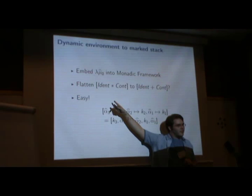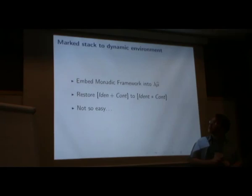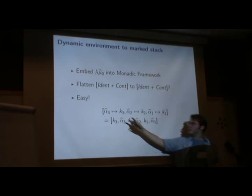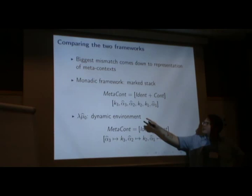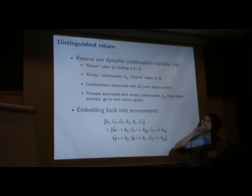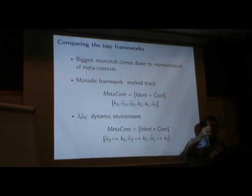All we have to do is flatten that list of pairs into a list of sums, which is pretty straightforward. You're essentially just breaking apart that structure and injecting them into the list. So that's not too bad. Going the other way, we've got a list of sums and now I have to make it into a list of pairs. That's not so obvious how you would do that, because as we saw before, you can have a continuation prompt continuation.